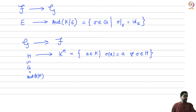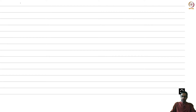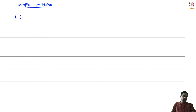This fixed field contains f, because the H we are looking at is a subgroup of G, and G consists of automorphisms of k which are the identity on f. So sigma will definitely fix f. Now, here are some simple properties: these maps are inclusion-reversing.